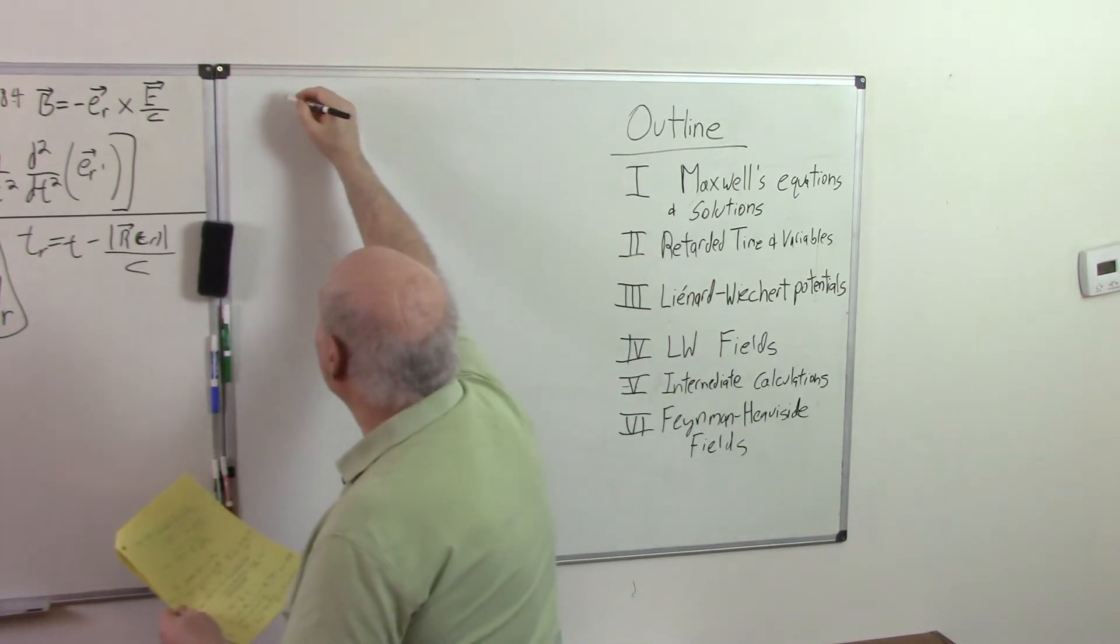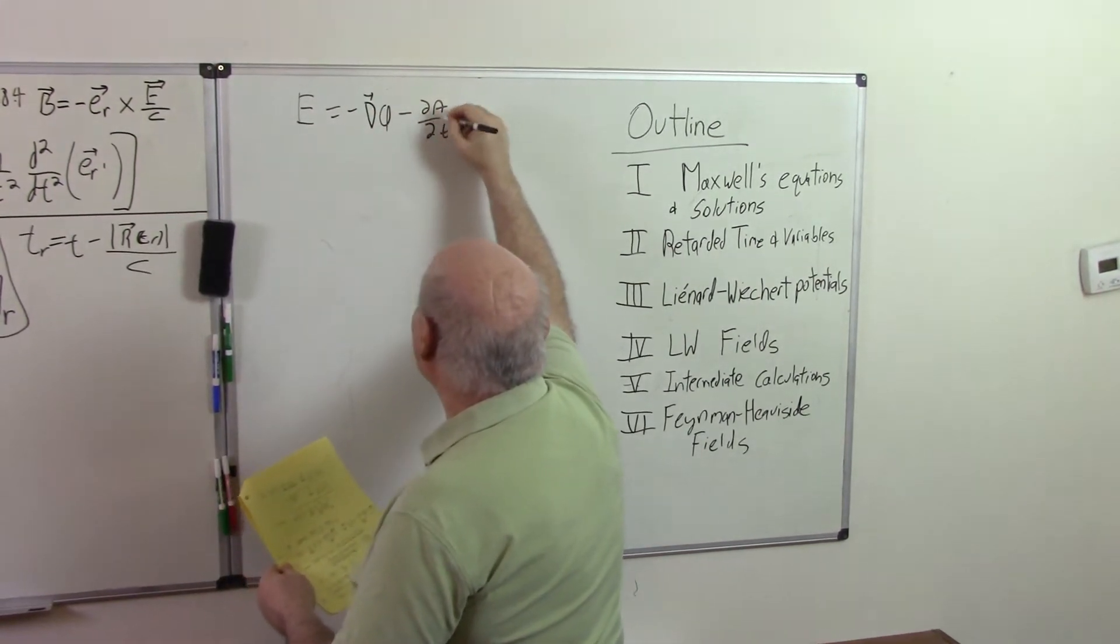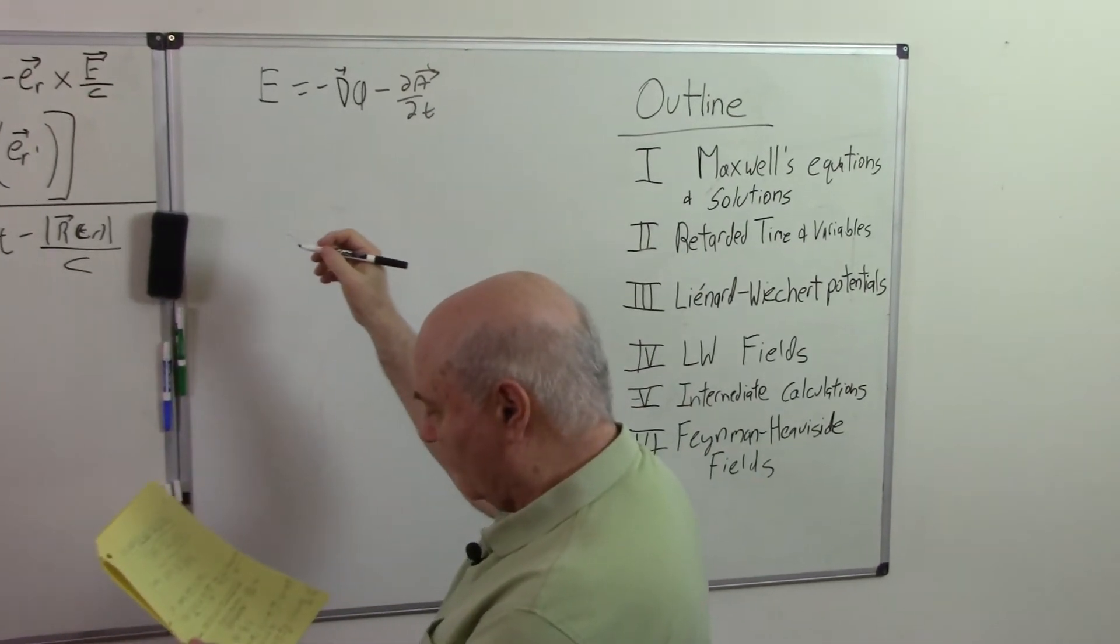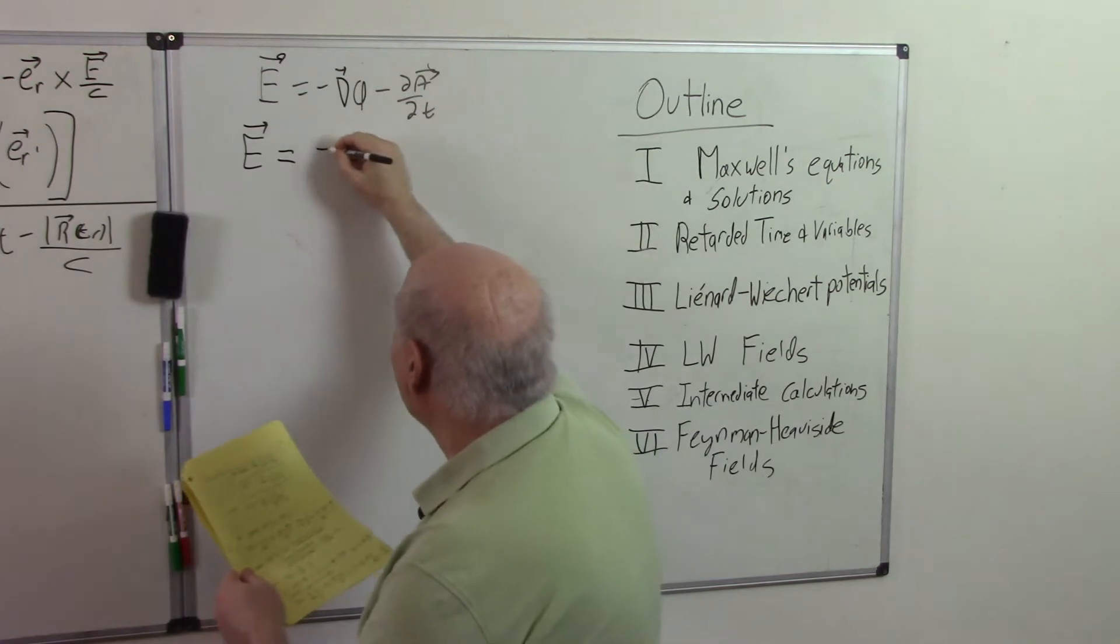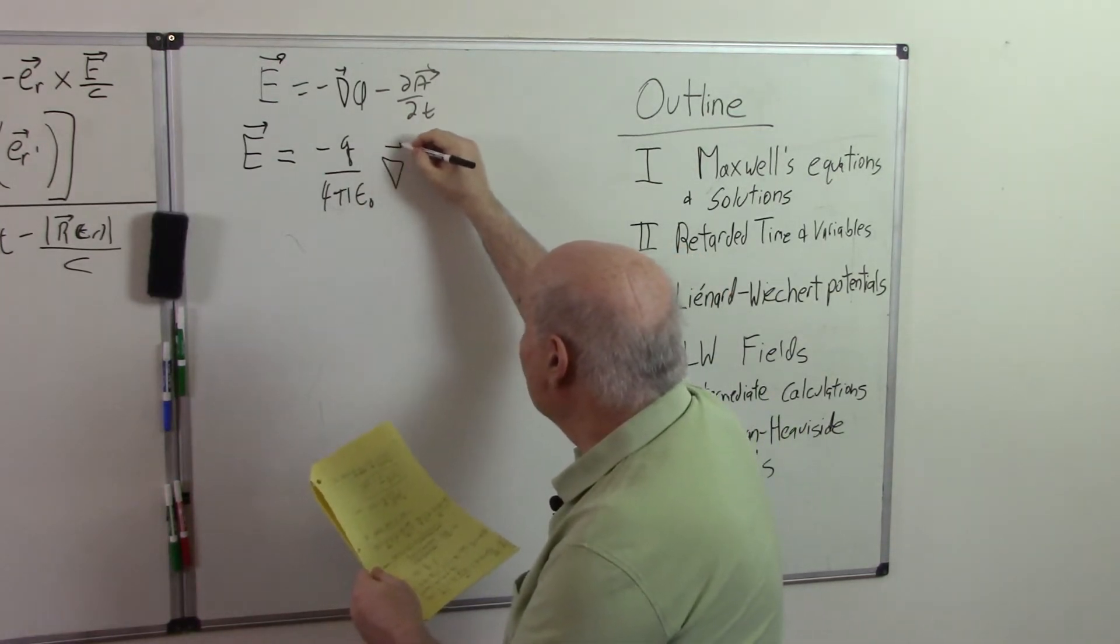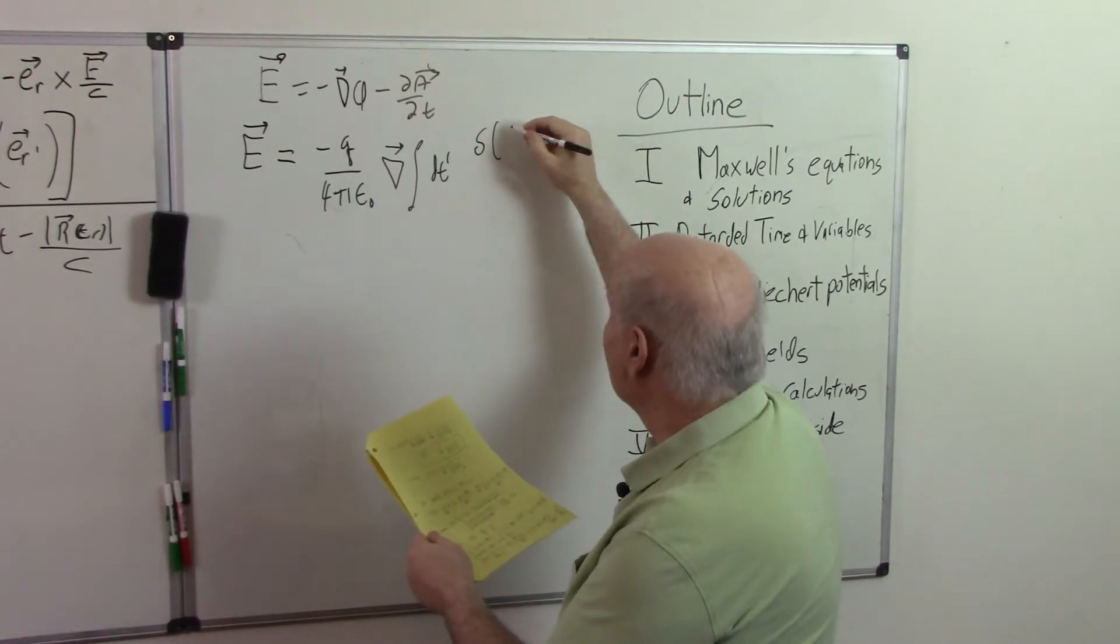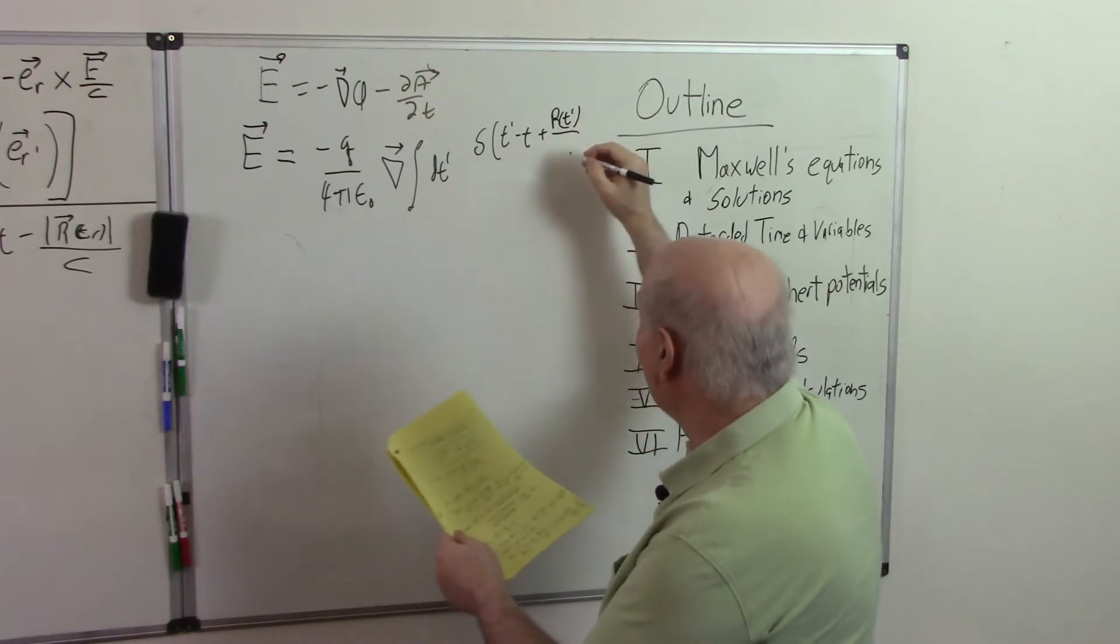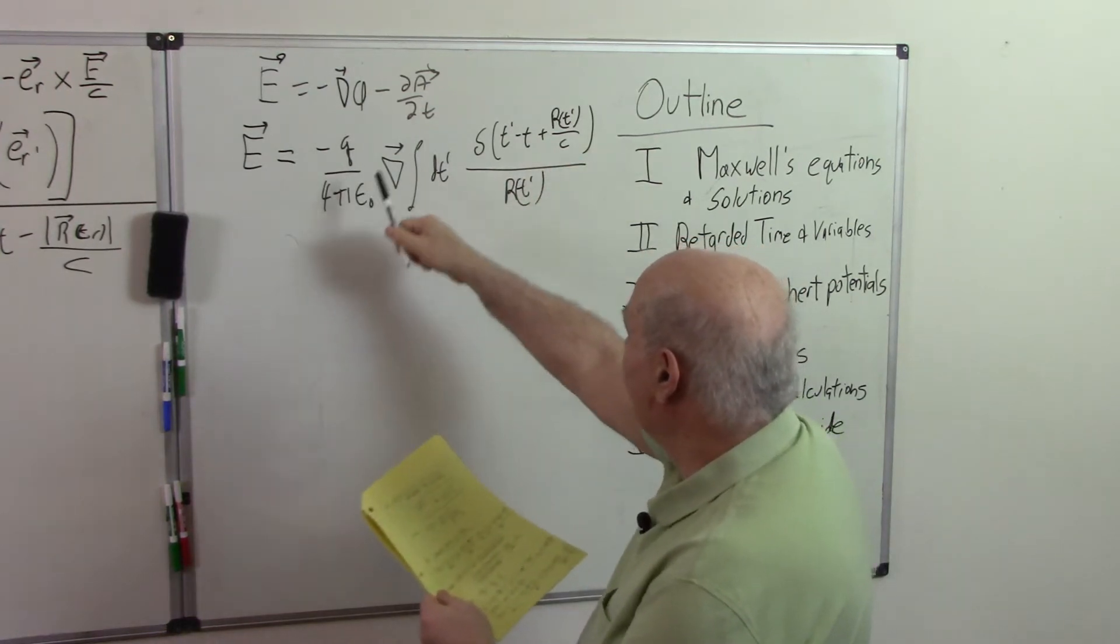So using the standard electromagnetism, E equals minus del phi minus the partial of A with respect to T. And substituting in formulas that we had derived earlier, we'll get this formula for E. E equals minus Q over 4 pi epsilon naught, the gradient of the integral of DT prime delta function T prime minus T plus the distance, the retarded distance to the charge over C divided by R of T prime. That's this part over here.